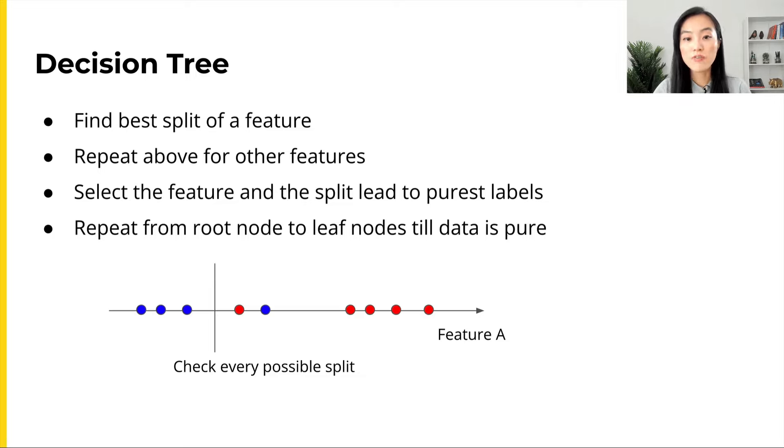Once we find the best split of feature A, we repeat this process for all other features. Then we select the feature with the best split, and that's the next split for tree node, again based on the measurement of purity. In this way, we repeat the splitting method from the root node all the way to the leaf node until the data label is pure.